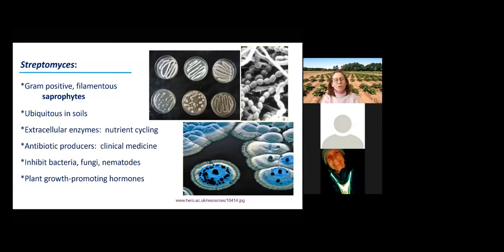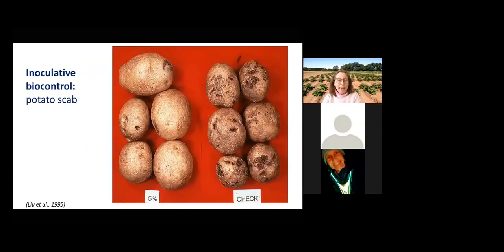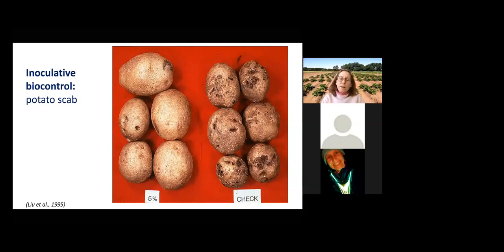Back to inoculative biocontrol — the first thing we did with microbes from the suppressive soil was inoculate and ask whether we could control plant diseases. We took one really good pathogen killer from the suppressive soil and inoculated it in a different field station about 250 miles away. We inoculated the potatoes at planting in April. The tubers were harvested in September, and we saw dramatic reductions in disease when we inoculated a single isolate from that disease suppressive soil.